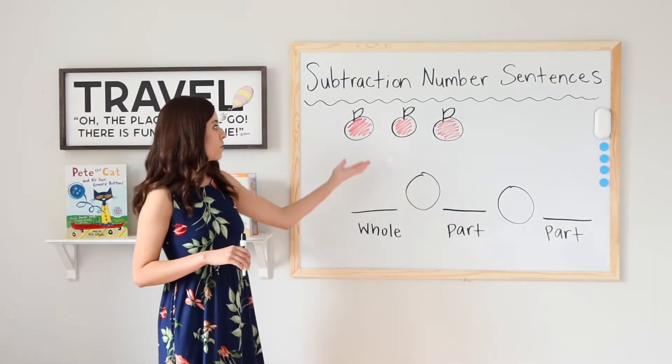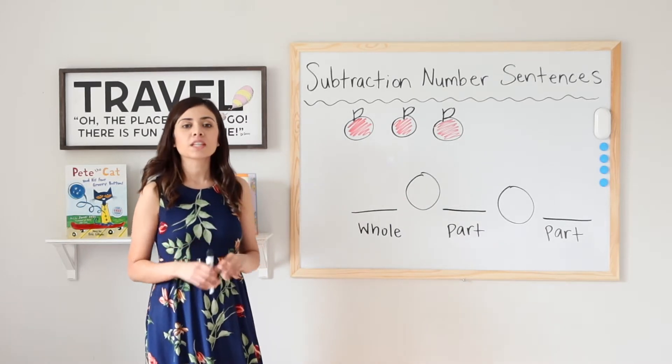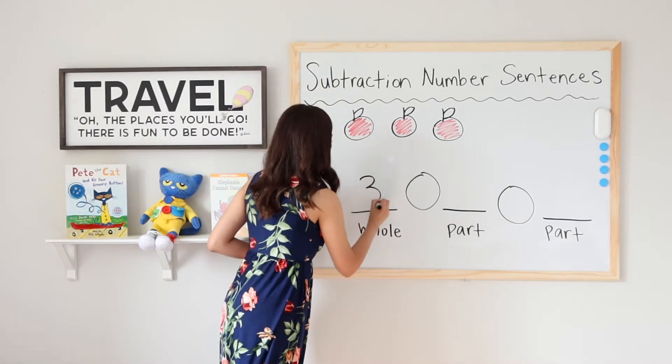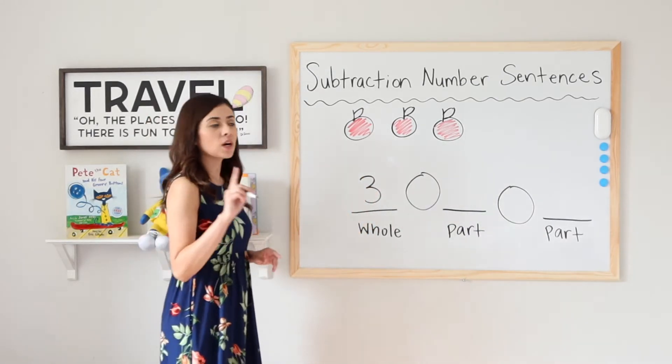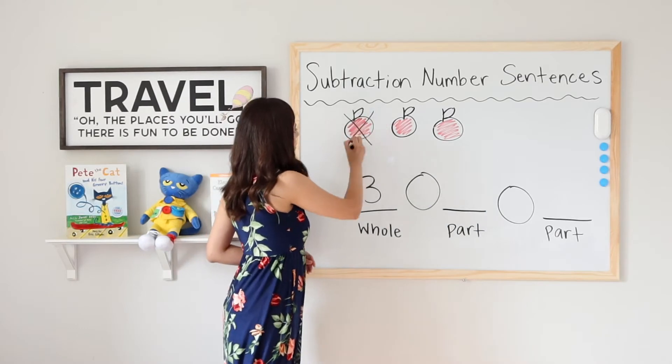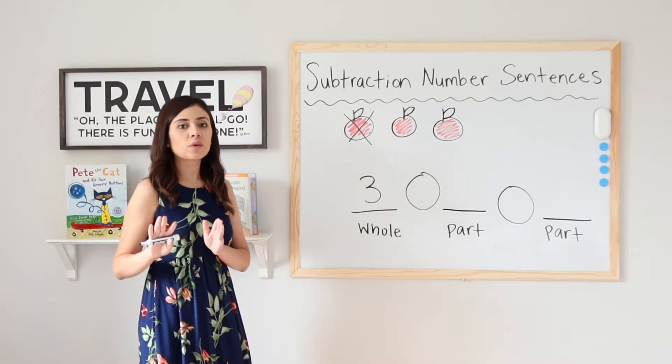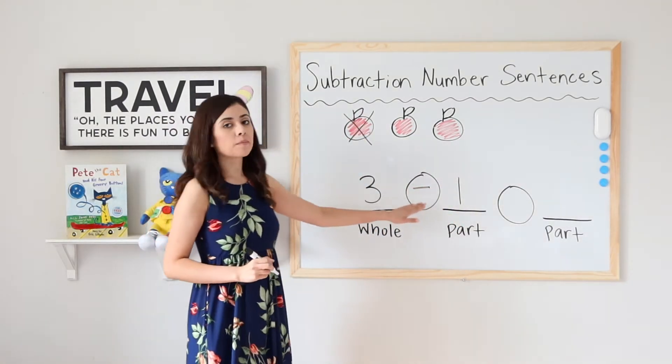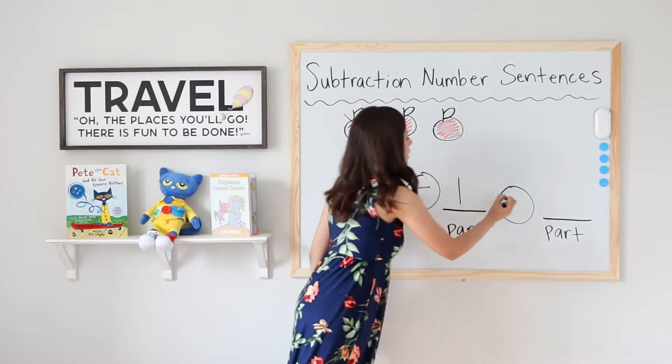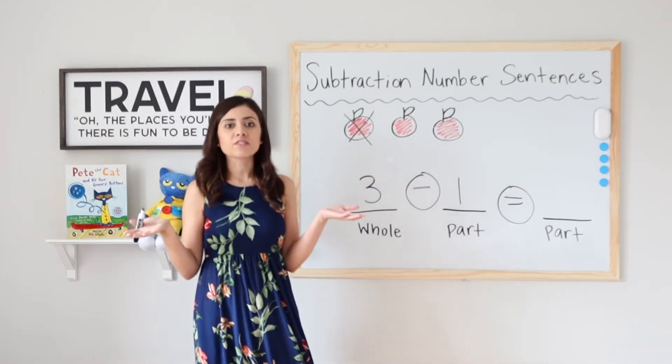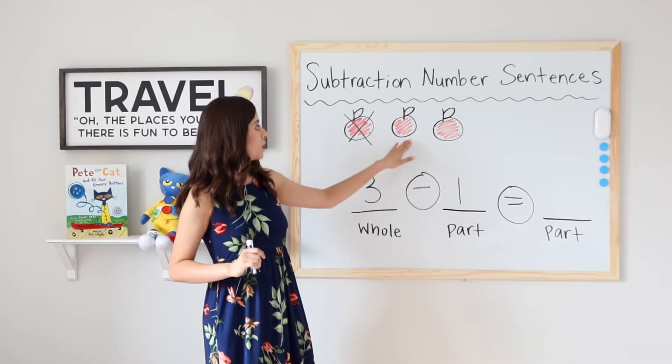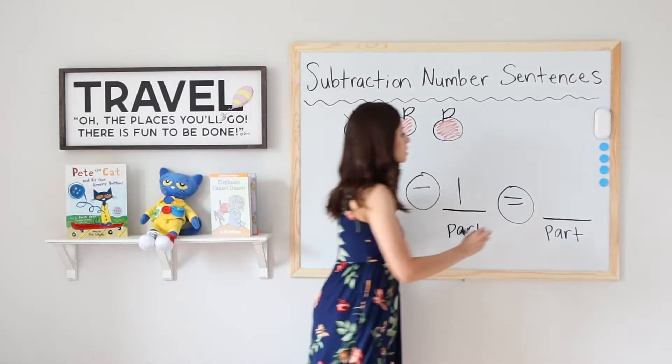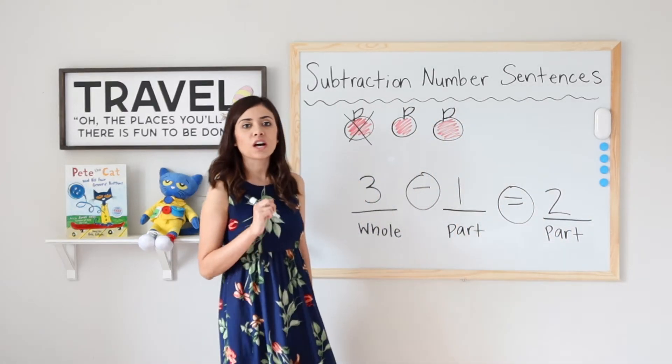So for this example, I have 3 delicious apples. 3 is what I started with, so it is my whole. I decide to eat 1. So I'm going to take 1 away. That's minus 1. 3 minus 1 equals how many do I have left? Let's count. 1, 2. So 3 minus 1 equals 2.